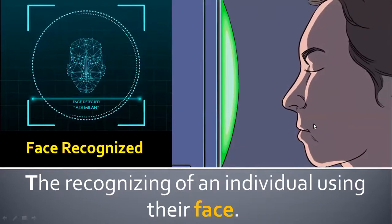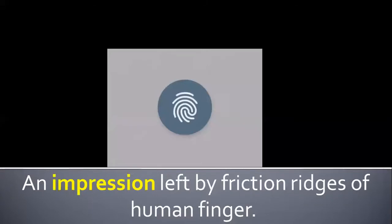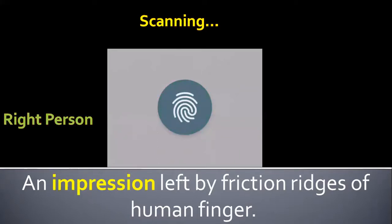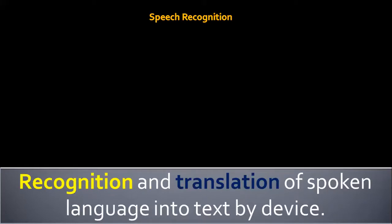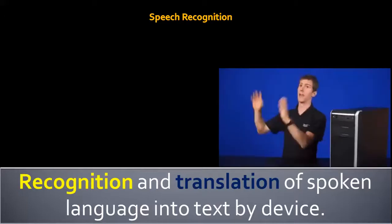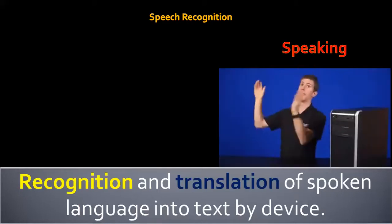Fingerprint scanning uses the impression left by friction ridges of human fingers to verify if it's the right person or not. For example, scanning started — right person; otherwise wrong. Speech recognition is the recognition and translation of spoken language into text by a device.